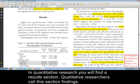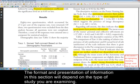In quantitative research, you will find a results section. Qualitative researchers call this section findings. The format and presentation of information in this section will depend on the type of study you are examining.